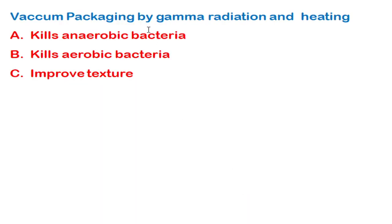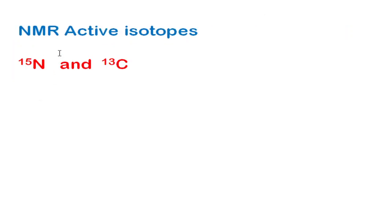The next question: vacuum packaging by gamma radiation and heating at 10°C for 10 minutes will kill which organisms? Vacuum packaging is generally employed in killing only aerobic bacteria; it will not kill anaerobic bacteria.